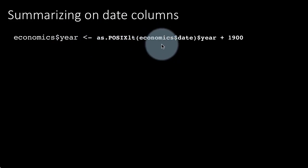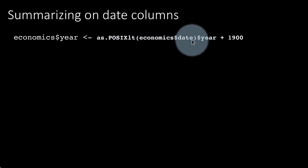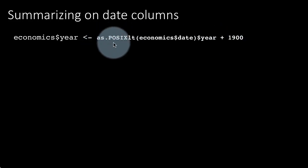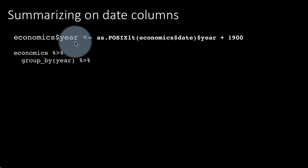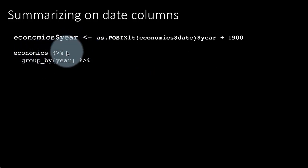In order to extract the year you can use this function: as.posixLT(economics$date), and then you do $year — this gives you the number of years since 1900. So to get the actual year we add back 1900. Don't worry too much about as.posixLT, just use it as it is. Similarly, to extract the month you can do it in a similar fashion. Now that we've extracted the year, what I want to do is economics grouped by year.